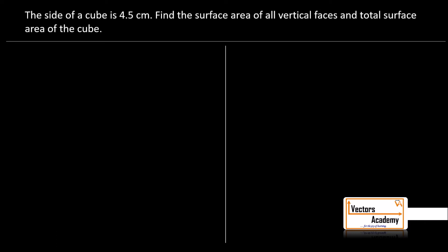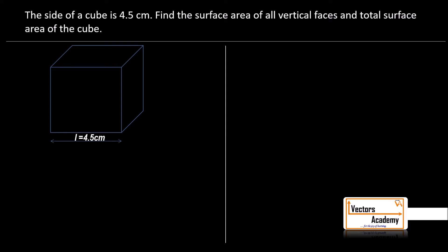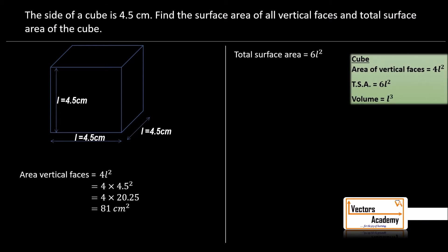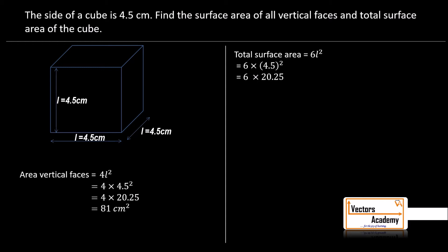The side of a cube is 4.5 cm. We have to find the surface area of the vertical faces and the total surface area. All dimensions of a cube are the same, so there is just one dimension L. The area of vertical faces is 4L²: 4.5² = 20.25, so 20.25 × 4 = 81 cm². The total surface area is 6L²: substituting L = 4.5 and solving we get the total surface area.